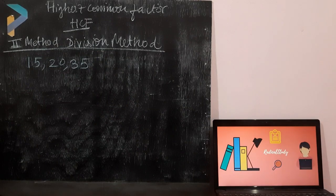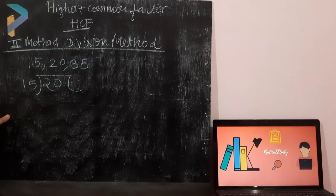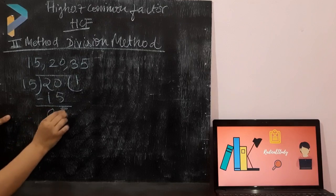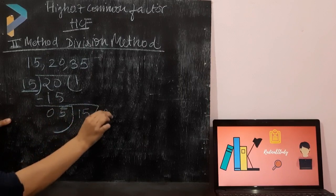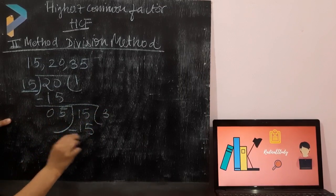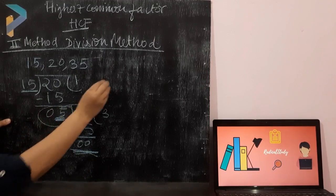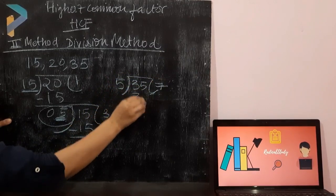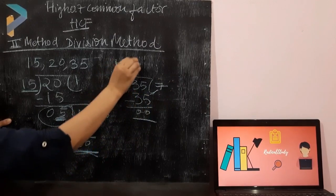The next example has three numbers: 15, 20, and 35. Since 15 is the smallest, it's the divisor. Dividing 20 by 15: 15 ones are 15, remainder 5. Now 5 becomes the divisor and 15 the dividend: 5 threes are 15, remainder 0. Then dividing 35 by 5: 5 sevens are 35, remainder 0. So the HCF of 15, 20, and 35 is 5.